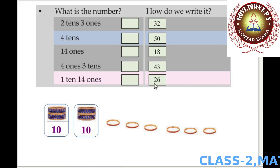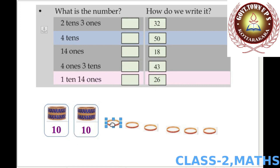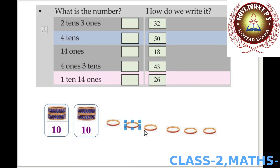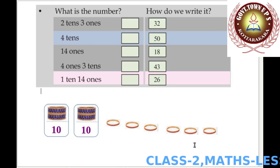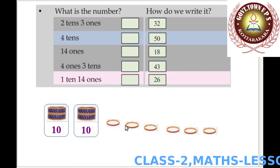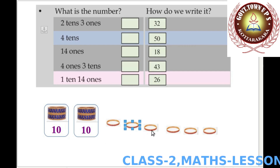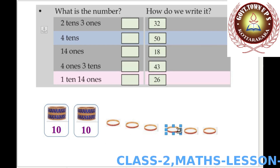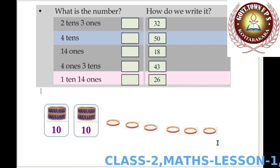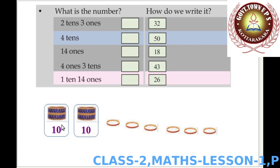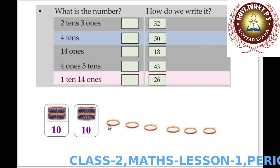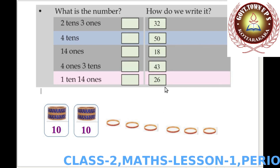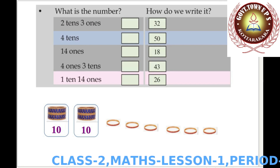Look here: 26. Count the tens: 1 ten, 2 tens — that is 20. Then count on: 21, 22, 23, 24, 25, 26. How many ones? 1, 2, 3, 4, 5, 6. So 26 equals 2 tens and 6 ones — 2 tens and 6 ones.